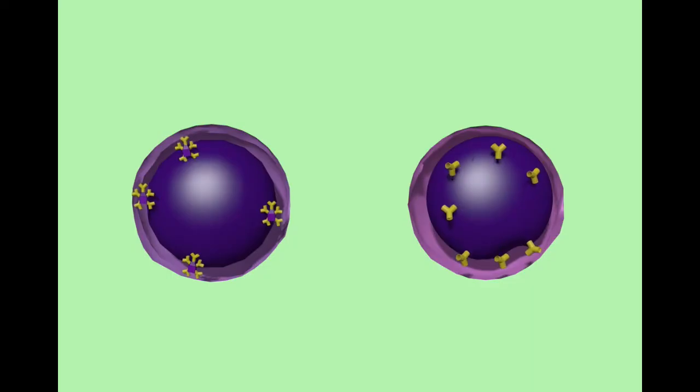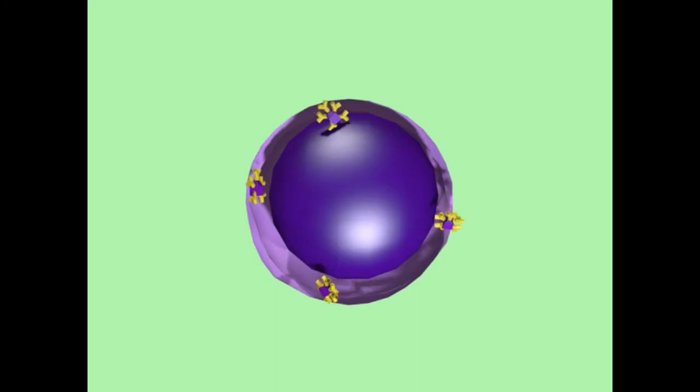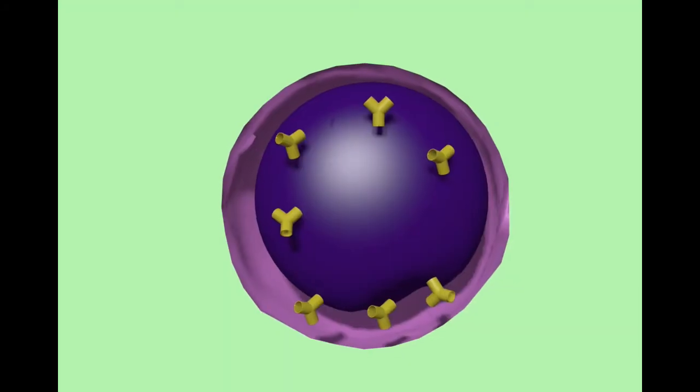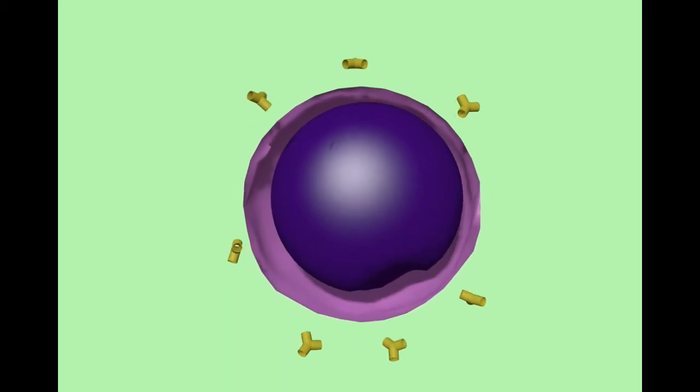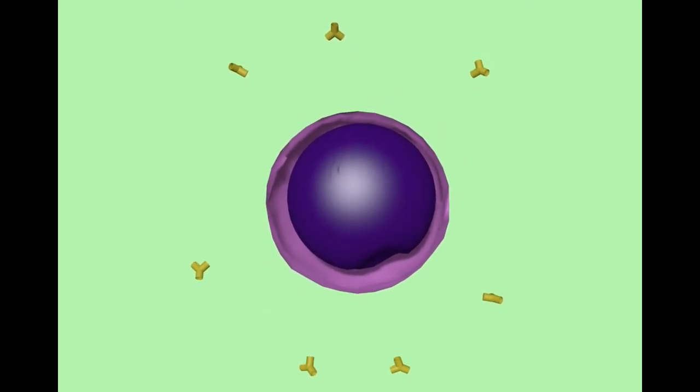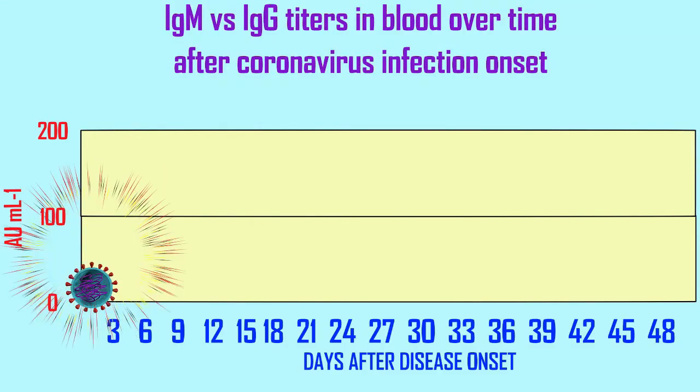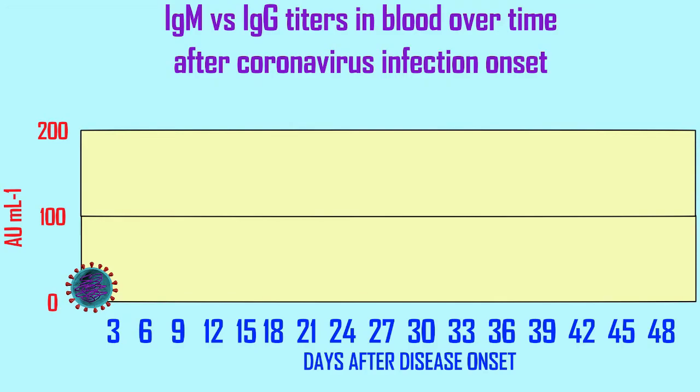There are different types of antibodies which can be produced during an infection. IgM, the immunoglobulin M, is secreted as a pentamer with five antibody proteins stuck to each other, while IgG is produced singly. There can be a difference in the time in which these antibodies are made.